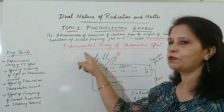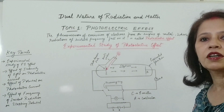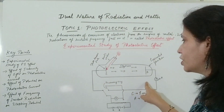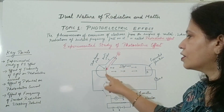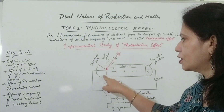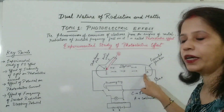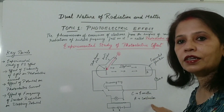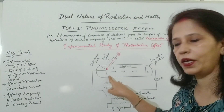To start with the experimental study of photoelectric effect, I have drawn the figure just to save time. You can see that it consists of an evacuated glass tube. It consists of a photosensitive plate C, which is called the emitter plate. A is the collector plate — A is the collector plate and C is the emitter plate.